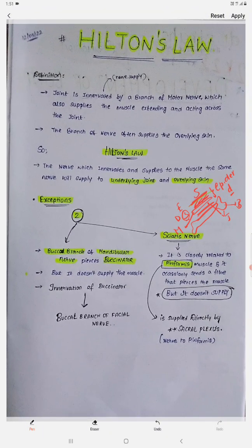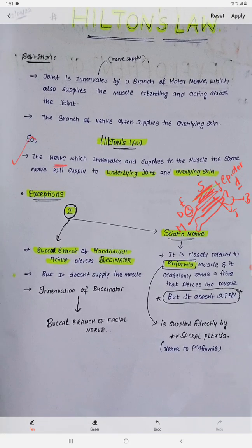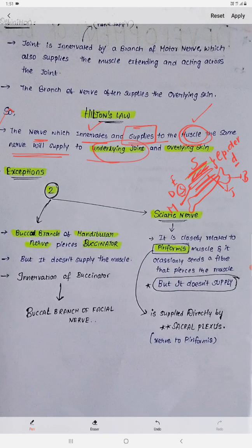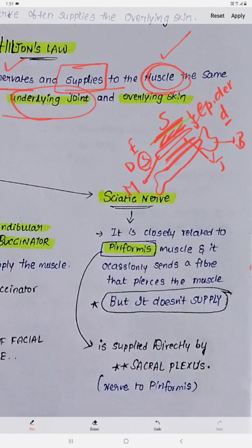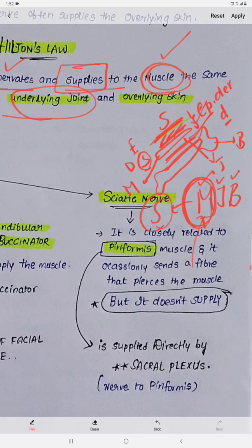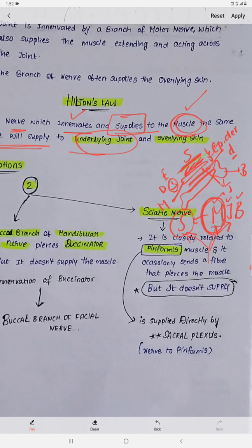Now we are going to discuss Hilton's Law. First of all, a muscle will be innervated by one nerve. That nerve will pierce the muscle and supply it. The same nerve will also supply the underlying joint. So whatever nerve is innervating and supplying the muscle will also supply the overlying skin and the underlying joint.